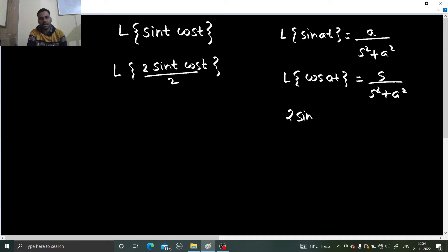We know 2 sin theta cos theta is nothing but sin 2 theta. So this will go as Laplace of sin 2t divided by 2. I can take that out and now directly use the formula, which gives you Laplace of sin 2t will be 2 divided by s square plus 2 square.